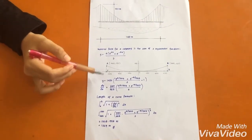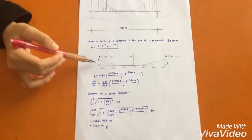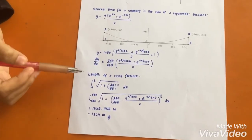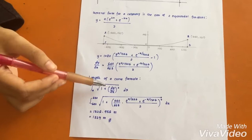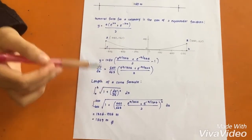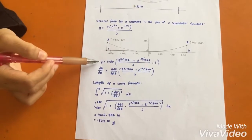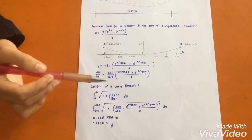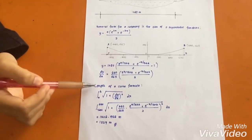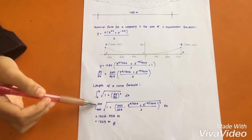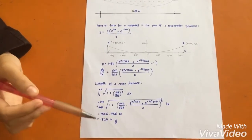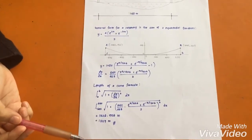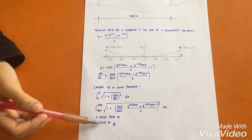This is the equation and graph for this equation. Since the length of a curve requires derivation of the function or equation, we do dy over dx and we get this answer. Then we substitute into the arc length formula, calculate, and get the answer. The length of the arc for the Golden Gate Bridge is 1327 meters.